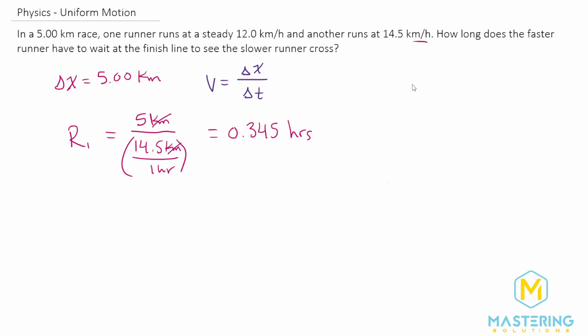We want to know how long the other runner has to wait, and you could keep it in hours. I'm going to change it to minutes. I think it's easier, and I believe that mastering physics might want it in minutes, but we know that in one hour, there are 60 minutes.